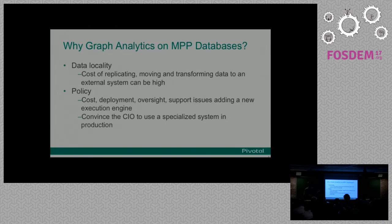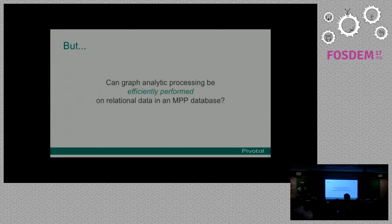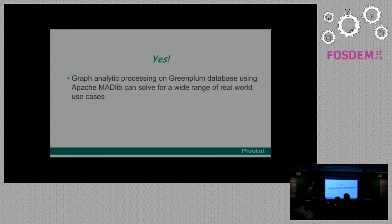Especially customers in financial services, government, and healthcare have very stringent requirements around this. If you really want to use Neo4j or Titan or another graph database, it needs to get put into production with all the overhead associated with that. So we asked: can you actually efficiently perform analytic processing on relational data in an MPP database? The answer is yes — not a blanket yes, because there's a class of graph algorithms that work effectively in MPP land, and others that don't, as I'll talk about shortly.